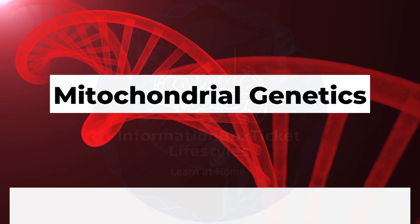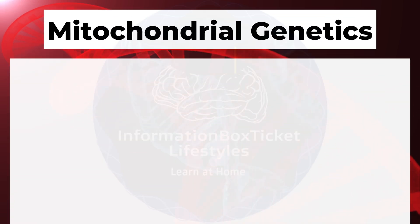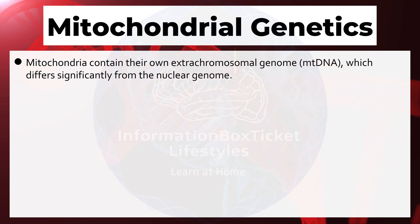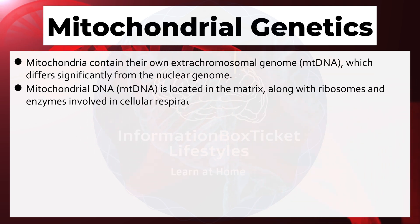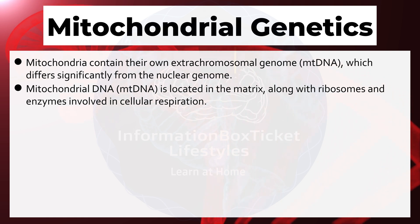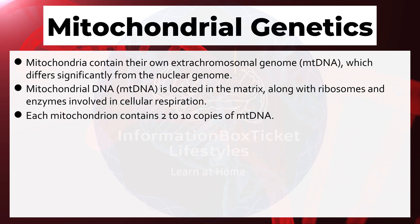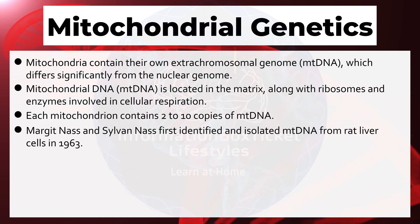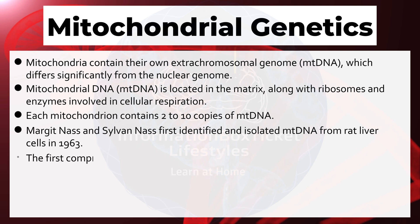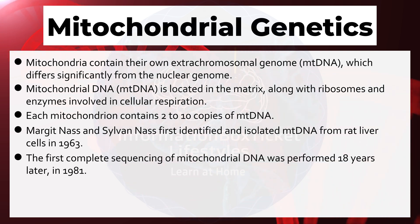Mitochondria contain their own extra-chromosomal genome, which differs significantly from the nuclear genome. Mitochondrial DNA (mtDNA) is located in the matrix, along with ribosomes and enzymes involved in cellular respiration. Each mitochondrion contains 2 to 10 copies of mtDNA. Margit Nass and Sylvan Nass first identified and isolated mtDNA from rat liver cells in 1963. The first complete sequencing of mitochondrial DNA was performed 18 years later, in 1981.